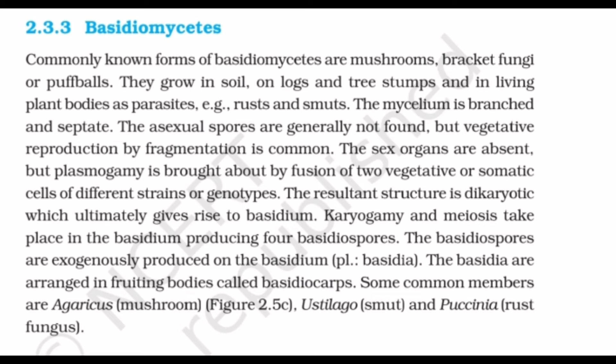The mycelium is branched and septate. Asexual spores are generally not found, but vegetative reproduction by fragmentation is common. The sex organs are absent — this is very important. Plasmogamy is brought about by fusion of two vegetative or somatic cells of different strains or genotypes. The resultant structure is dikaryotic, which ultimately gives rise to the basidium. Karyogamy and meiosis take place in the basidium, producing four basidiospores exogenously. The basidiospores are arranged in fruiting bodies called basidiocarps. Common members are Agaricus (mushroom), Ustilago (smut), and Puccinia (rust fungi).